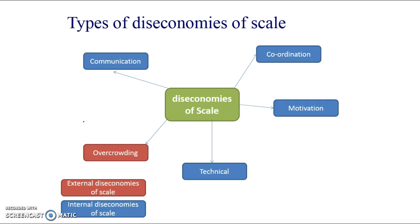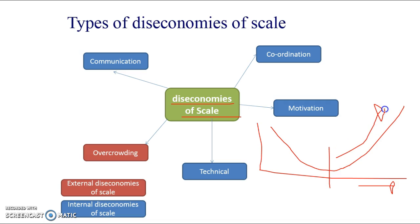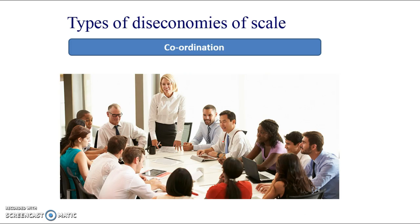Now the other side — diseconomies of scale. We're still increasing output, but why, after a certain point, do long-run average costs start to increase? More people in the firm means a bigger operation, more chance of miscommunication, and more investment needed in communication technology. Coordination becomes harder — you may need more meetings, specialist schedulers, project managers. Time is money, and those additional roles cost more.